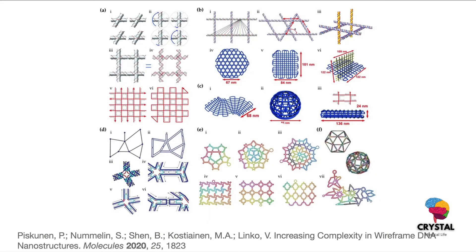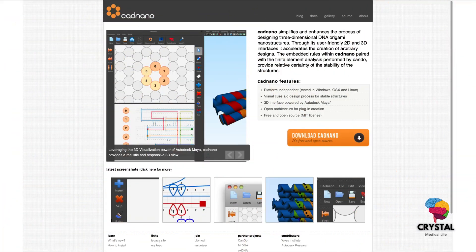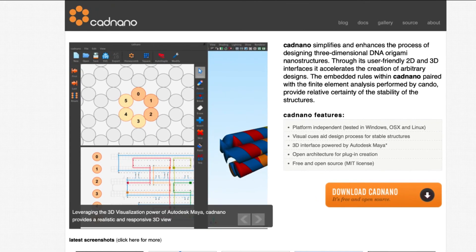These are the types of complex structures you can create. You can now understand how to create DNA structures using DNA origami. There is also software called caDNAno, which is available online. You can use this software to make more precise models according to your needs.